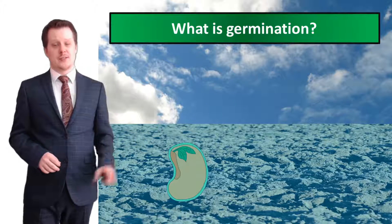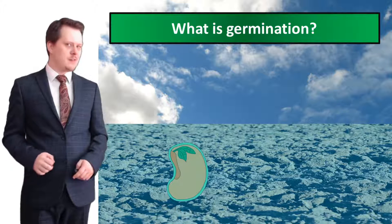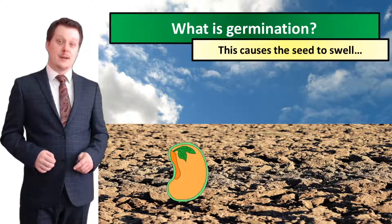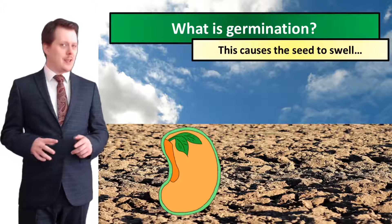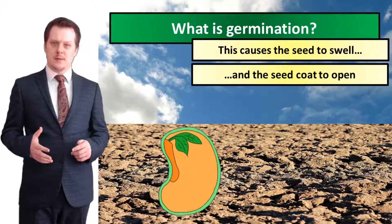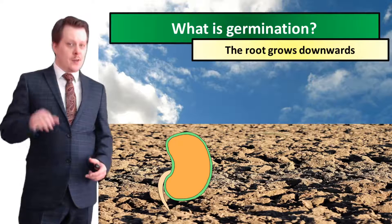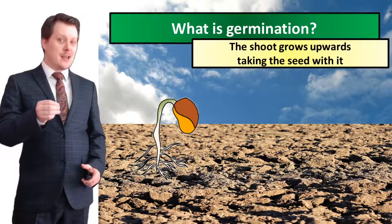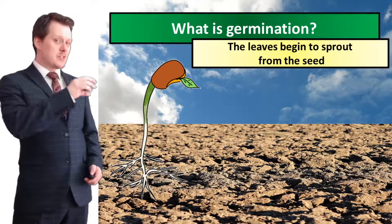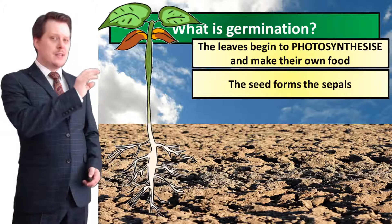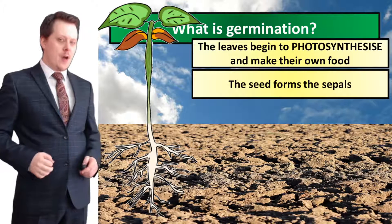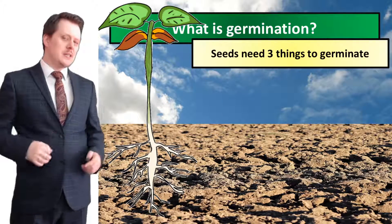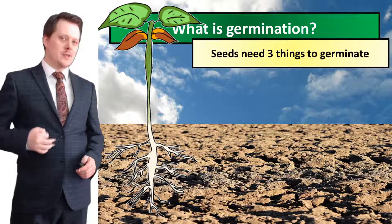Next we're going to look at germination. The seed has travelled away from the original plant and finds itself some soil. The seed absorbs water from the soil, which causes it to swell, and this increase in size causes the seed coat to open. With the seed coat open, the root from the embryo begins to grow downwards, which pushes the shoot upwards, taking the seed with it. The leaves then begin to sprout and photosynthesize, making their own glucose. The remnants of the seed form the sepals of the plant.